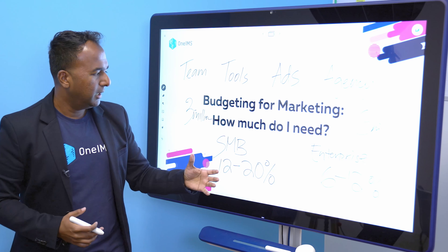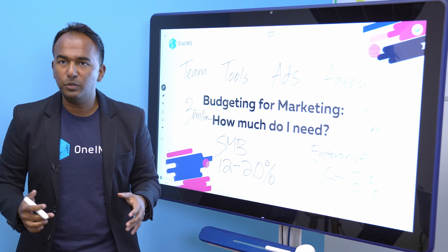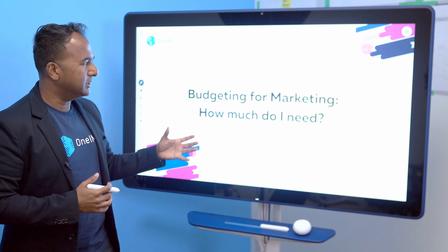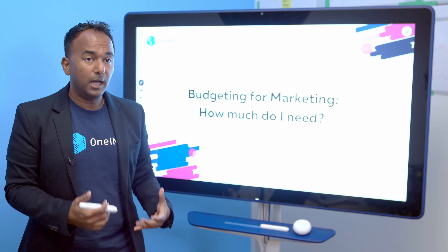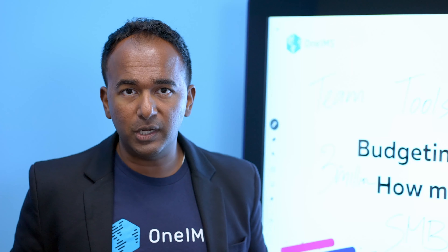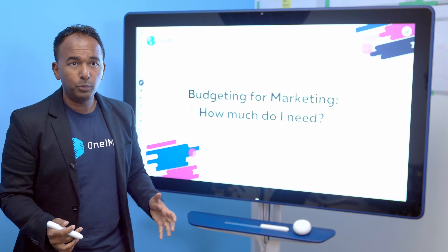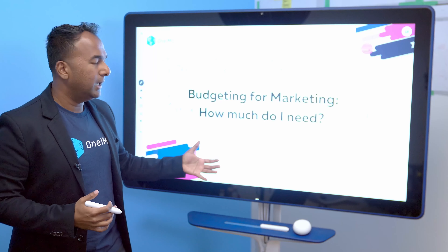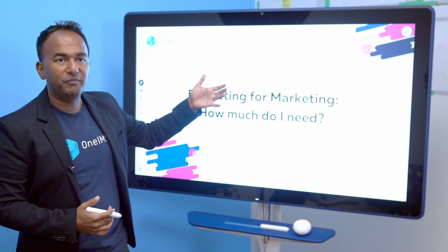A lot of marketers struggle with this math — whether to use percentage of revenue, percentage of profit, or an arbitrary budget that leadership comes up with irrelevant of revenue, profitability, or growth rate. The right answer is based on your growth goals. If you're trying to grow at 10% year over year, you take a percentage of your total revenue, invest it back into marketing, and increase that by 10%. If it was $100,000 annually, you give $110,000 and invest that in the most efficient way possible.